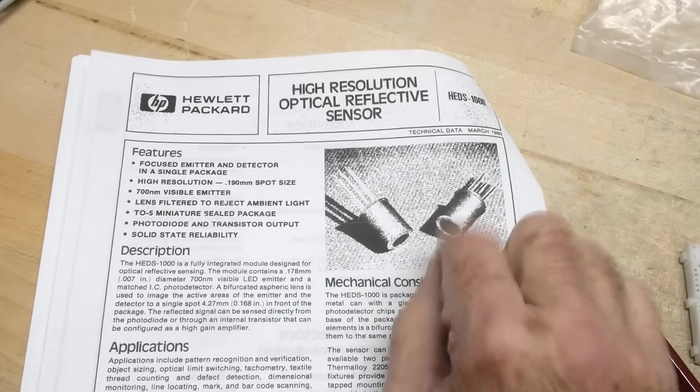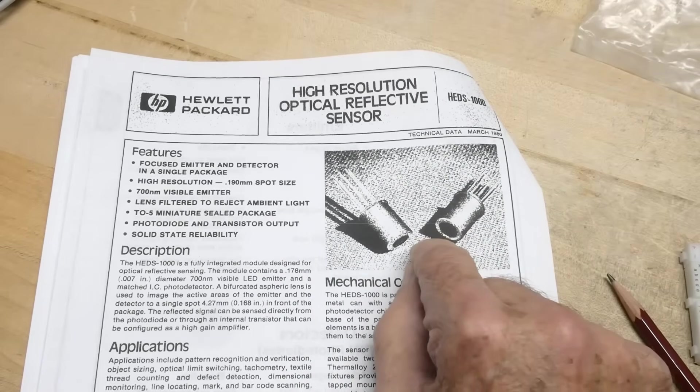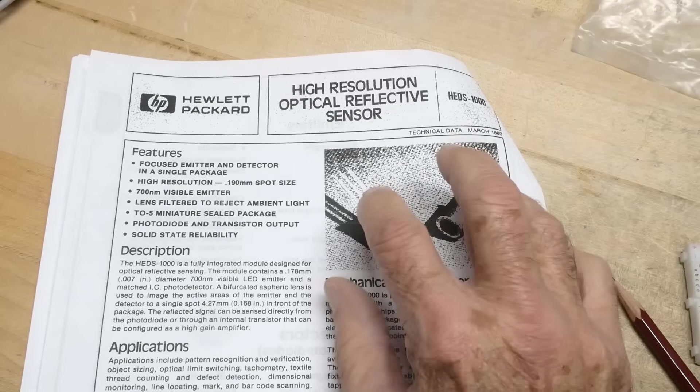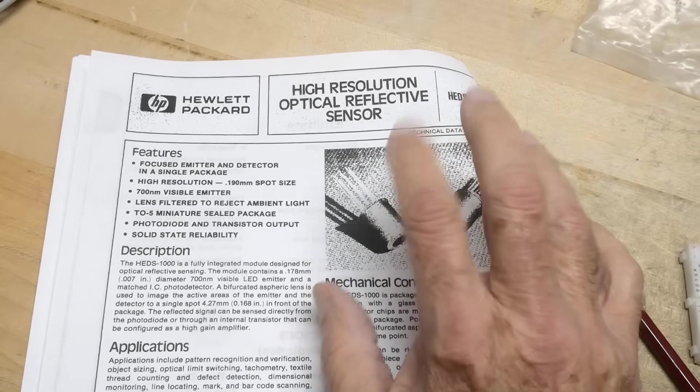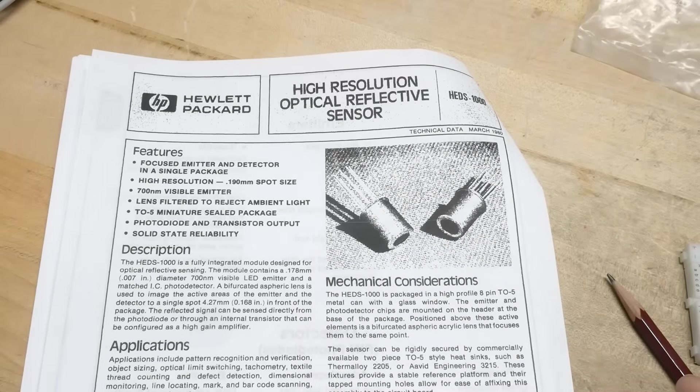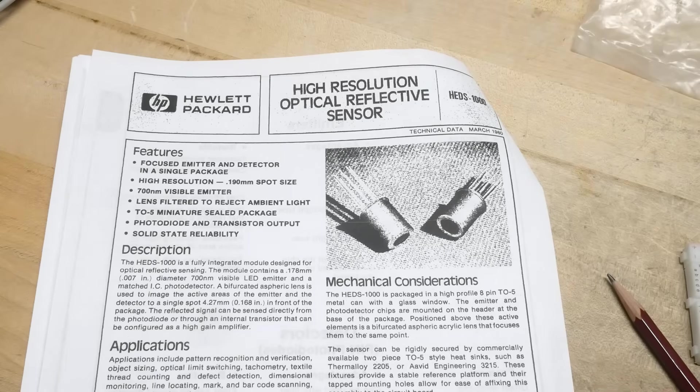This particular product really opened my eyes about what can be done using optics and electronics at the same time. So what is it? Well, it's actually a barcode sensor, but it can be used for other things as well.